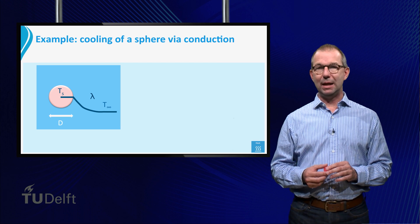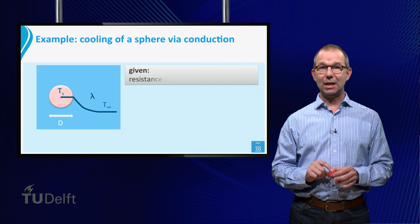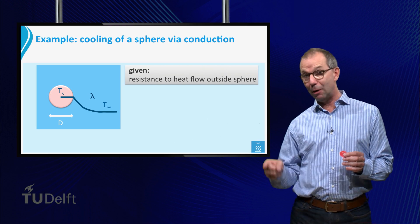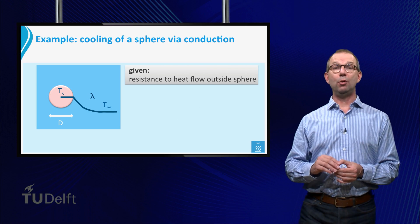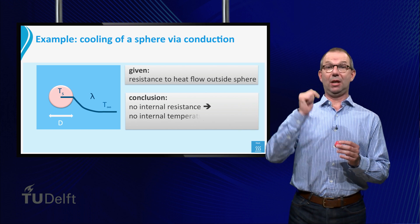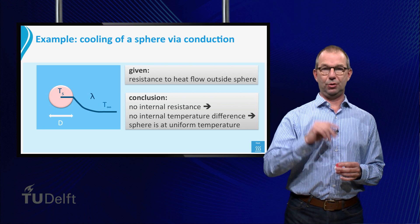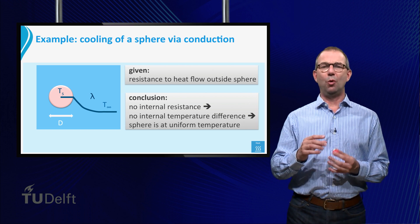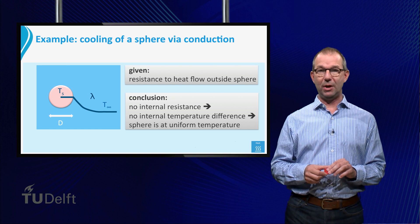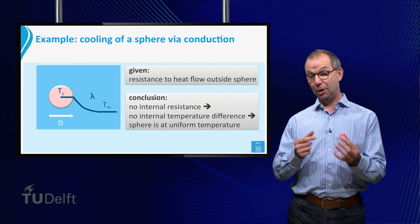First, we analyze a sphere that is cooling down. We take as case that the resistance to heat transport is completely outside the sphere. Then, it follows that there can be no temperature difference inside the sphere, since like with Ohm's law, a driving temperature difference over a zero resistance would cause an infinite current. Thus, we conclude that in the present case, the sphere while cooling down is at a uniform temperature.